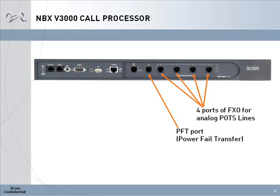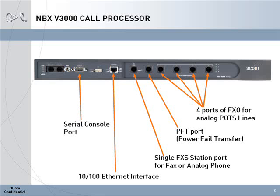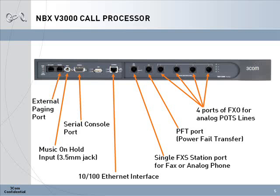The first FXO port has a PFT port — power fail transfer port. This allows for the first trunk line to connect to a standby analog phone in the event of a complete power outage. There is one FXS station port, which is used to connect to an analog phone or fax machine. The V3000 connects to the network with a 10/100 Ethernet interface. The serial console port is used mainly for diagnostics. The music on hold input is a standard 3.5mm or 1/8 inch stereo jack, which can be connected to any device such as a CD player, MP3 player, or any other compatible device. There is also an external paging port — a 600-ohm dry contact port to connect to any standard overhead paging amplifier.